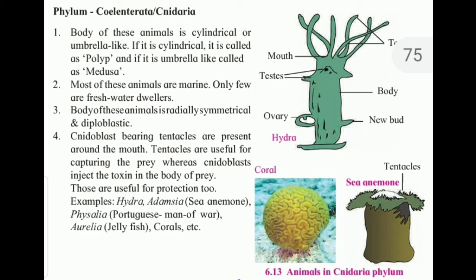The body of these animals is cylindrical or umbrella-like. If it is cylindrical, it is known as a polyp, and if it is umbrella-like, it is called a medusa. Most of these animals are marine. The body of these animals is radially symmetrical and diploblastic.